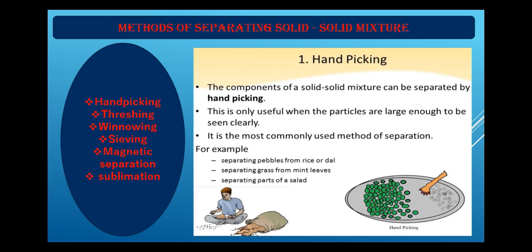As explained in the previous video, there are six types of mixtures: solid-solid, solid-liquid, solid-gas, liquid-liquid, liquid-gas, and gas-gas mixtures. First we will learn how to separate a solid-solid mixture. There are mainly six methods: hand picking, threshing, winnowing, sieving, magnetic separation, and sublimation.